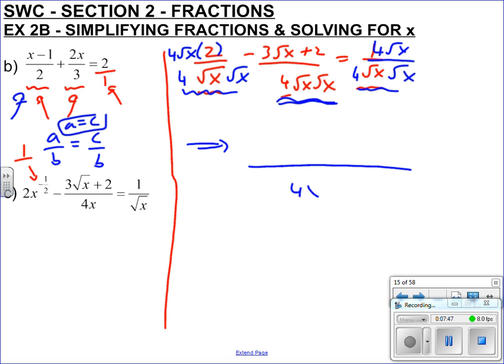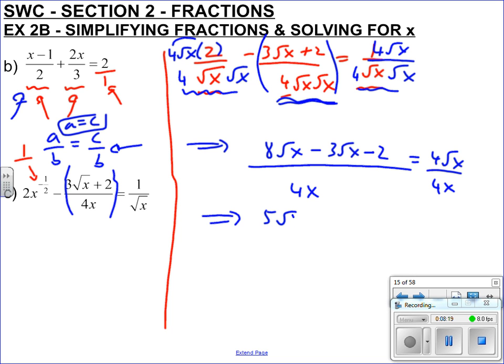So 4 root x times root x is 4x, obviously. 4 times 2 is 8 root x. And here, remember it's minus everything, big brackets around here. So that's minus 3 root x minus 2, watch out for that. Equals 4 root x here over 4x. Denominators are the same, which means the tops are the same.